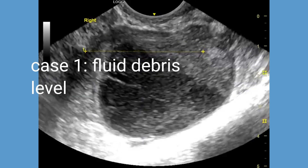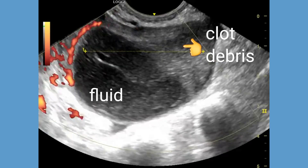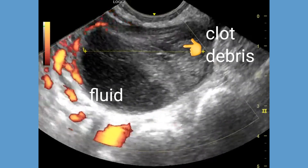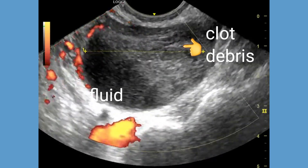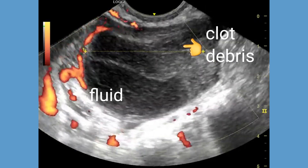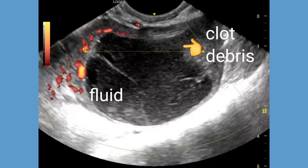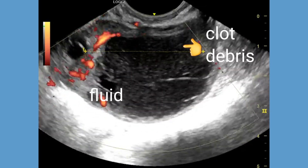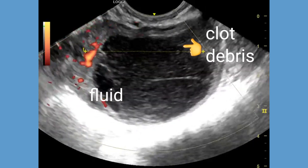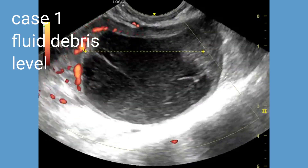The echogenic debris refers to the presence of a clot-like material within the cyst. The separation occurs due to the settling of blood components within the cyst, with the denser cellular debris settling at the dependent portion of the cyst due to gravity. As a result, you can see a distinct line or interface within the cyst where the fluid and the debris meet.